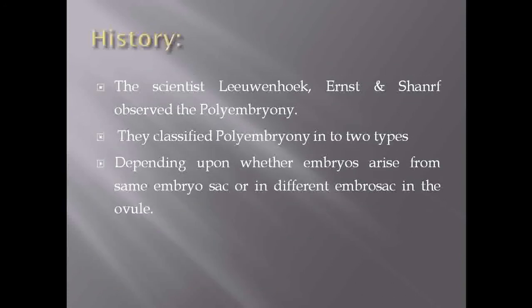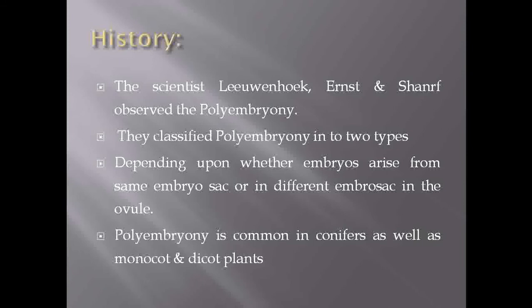Now moving towards the history of polyembryony. Scientists Leavenhook, Ernst, and Schnarf first observed and classified polyembryony into two types depending upon whether the embryo arises from the same embryo sac or from a different embryo sac in the ovule. They categorized polyembryony into true polyembryony and false polyembryony. This polyembryony was basically observed in gymnosperms — members of conifers — as well as in angiosperms, both dicot and monocot species.